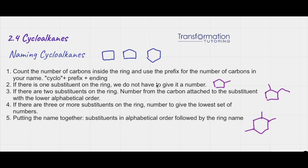Naming cycloalkanes. Cycloalkanes are molecules that contain carbons in a ring. In order to name cycloalkanes, we have to start the name with 'cyclo' and then we use the prefix which identifies how many carbons are inside of our ring.